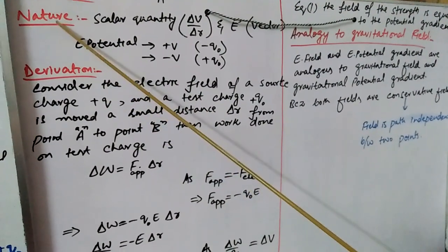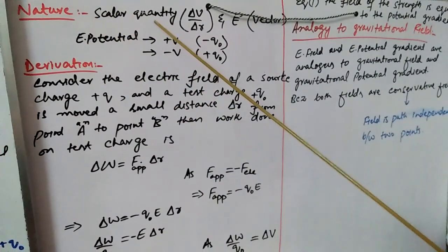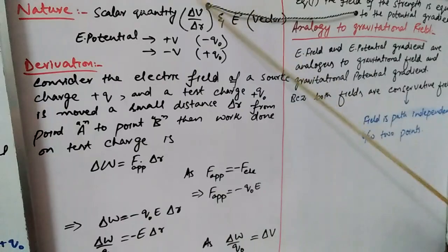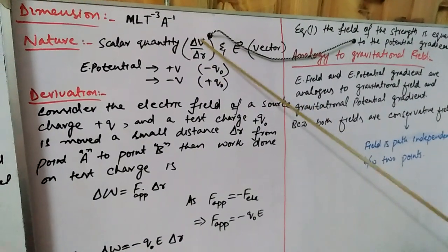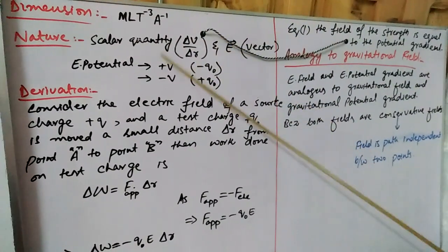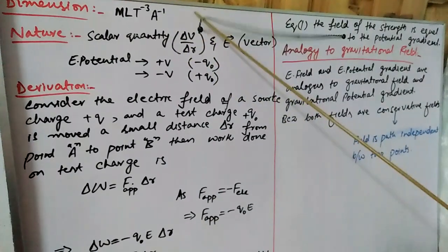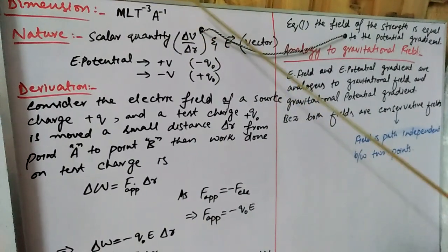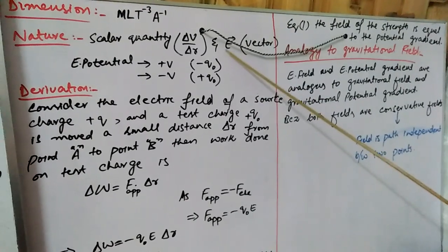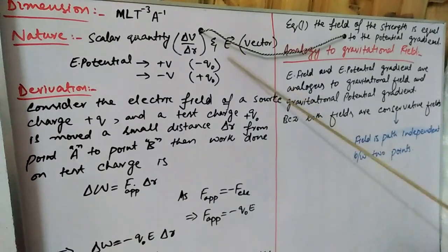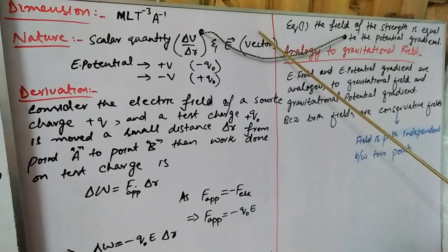The next point is nature. Potential gradient is a scalar quantity, although it is strongly linked with electric field, whereas electric field is a vector quantity.